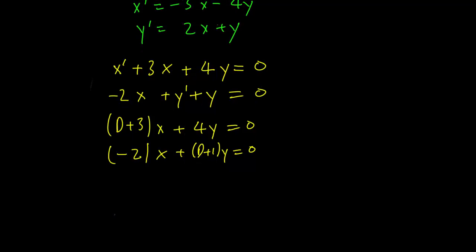Now we can do something that is similar to how we solve algebraic equations back in high school or middle school. When these are all constants, one thing you can do is multiply the second equation by D plus 3 and multiply the first equation by minus 2.